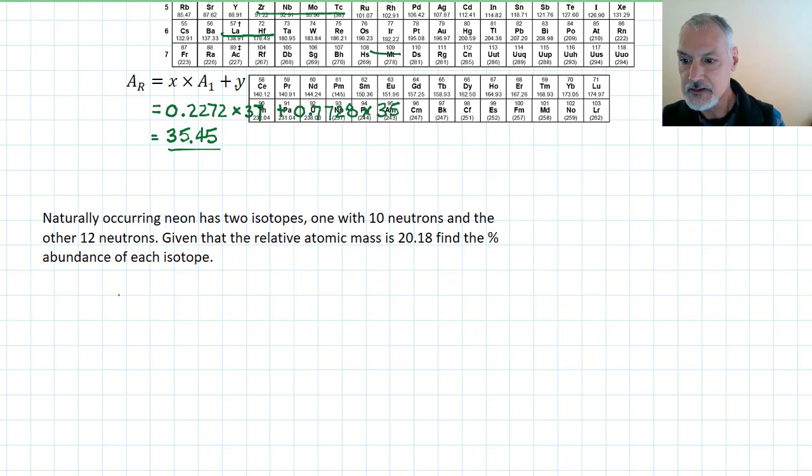The element neon has 10 protons in it. If it also has 10 neutrons, that means I would have some neon of this variety, and I would also have some neon atoms with 10 protons and 12 neutrons that would be of this variety. What I'm being told here is the relative atomic mass is 20.18. So, 20.18 must equal,